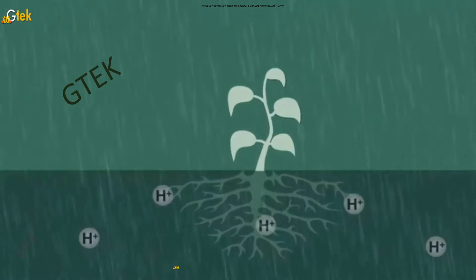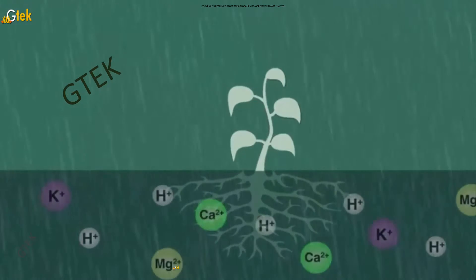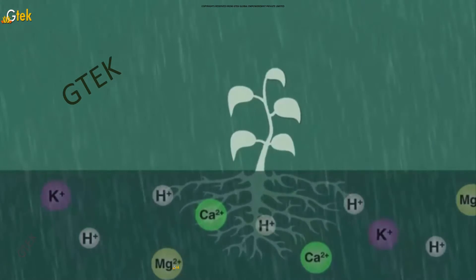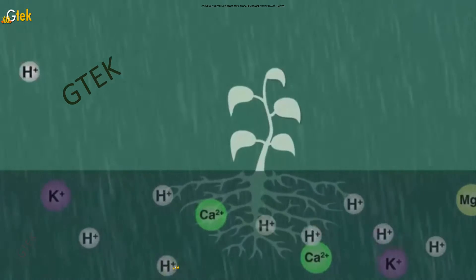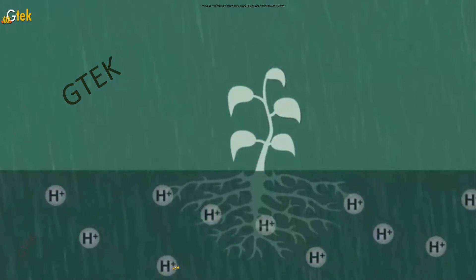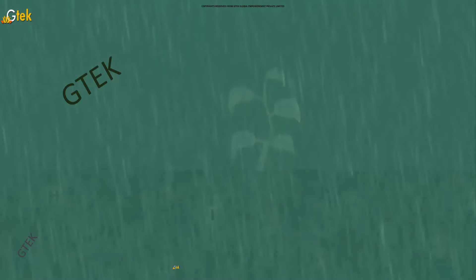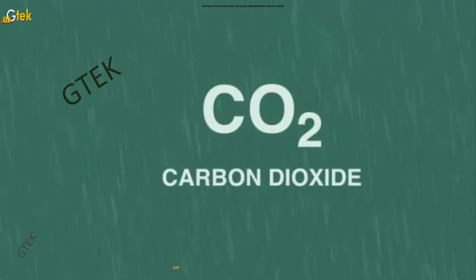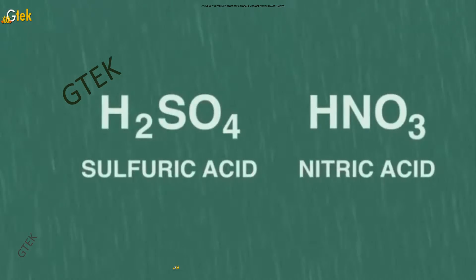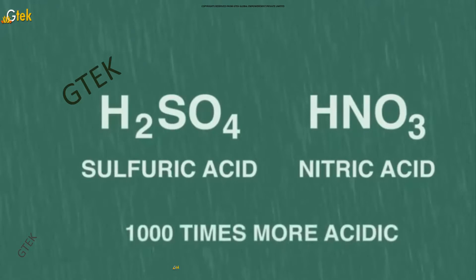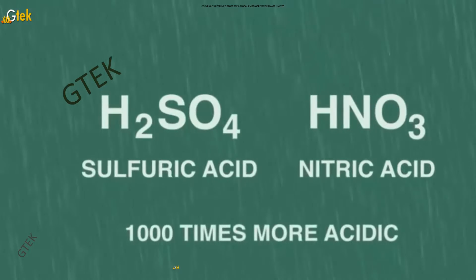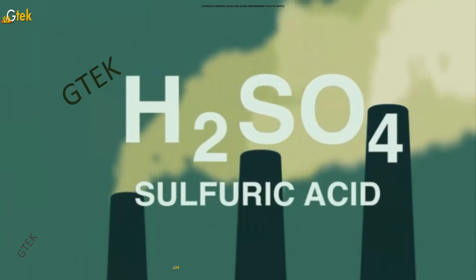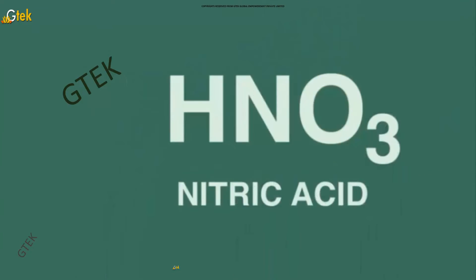You can see a lot of H⁺ ions mixed into the soil, and H⁺ ions indicate acidic nature. Carbon dioxide reacts with water to make carbonic acid. Sulfuric acid and nitric acid are 100 times more acidic, emitted from factories and vehicles respectively.